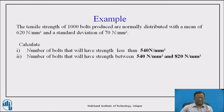Here is an example where tensile strength of 1000 bolts, which are produced on a certain manufacturing setup, is found to be distributed with a mean of 620 Newton per mm² and a standard deviation of 70 Newton per mm². This represents the process capability of that particular process, characterized by a normal distribution curve with mean 620 N/mm² and standard deviation 70 N/mm².